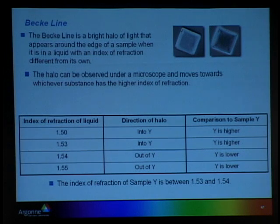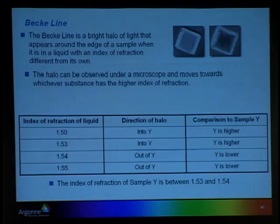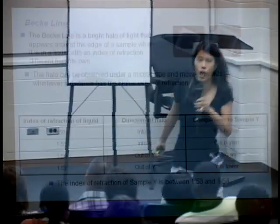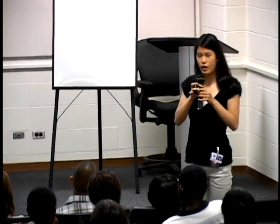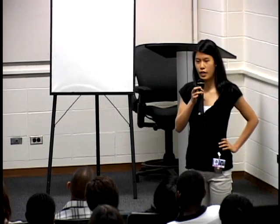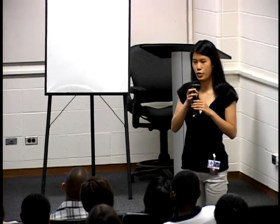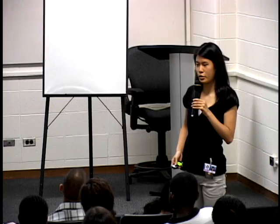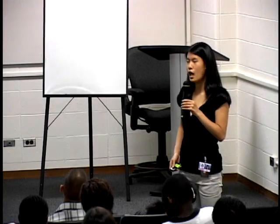The halo can be observed under a microscope and moves towards whichever substance has the higher index of refraction. Another way of figuring out what elements are in the sample is through PIXE, or particle-induced x-ray emission.